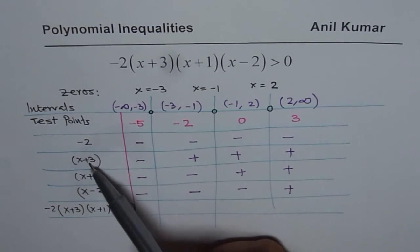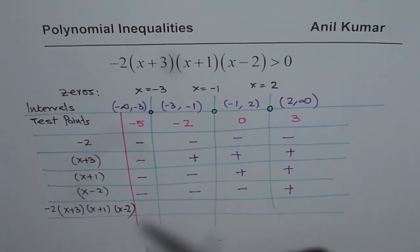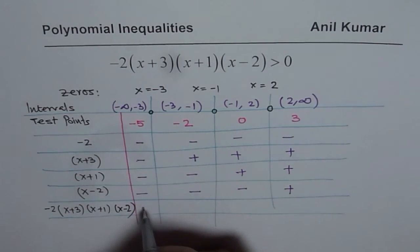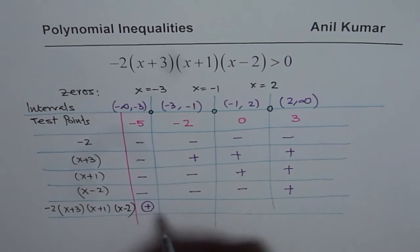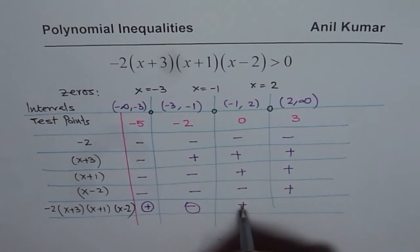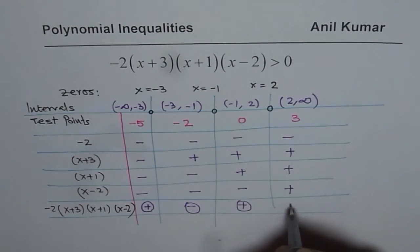If we multiply these 4 factors, that means negative 4 signs. Even number of negative signs when multiplied will give us positive, odd number will give us negative.